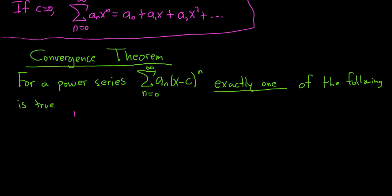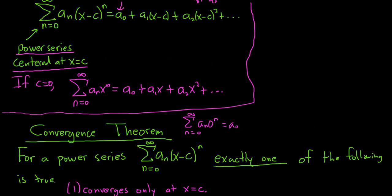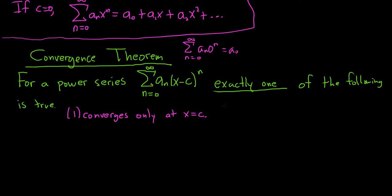The first case is it converges only at the center, only at x equals c. I should note that it always converges at c. If you plug in c, you get a sub n times c minus c, which is zero to the n. Zero to the n is zero unless n is zero, in which case you get one. So it's equal to a sub zero — it's a number, so it converges. This case says it only converges at x equals c and converges nowhere else.